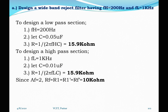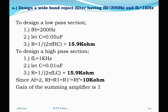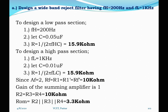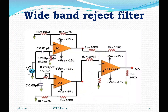With a pass band gain of 2, Rf = R1 for the high pass filter and R1' = Rf' for the low pass filter, all considered equal to 10 kΩ. Next, design the summing amplifier with a gain of 1, so R2, R3, and R4 are each 10 kΩ. The parallel combination ROM = R2 ∥ R3 ∥ R4 = 3.3 kΩ.